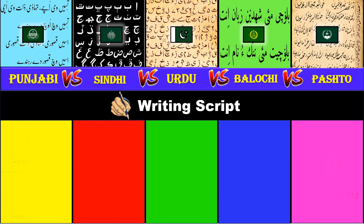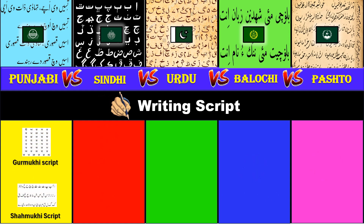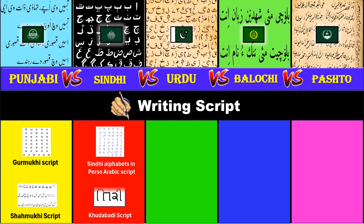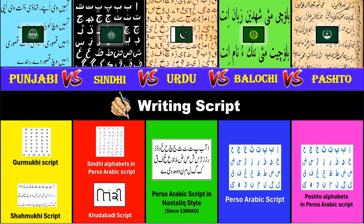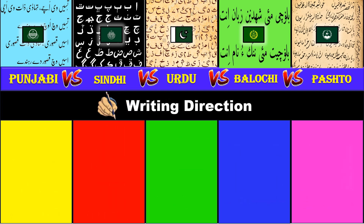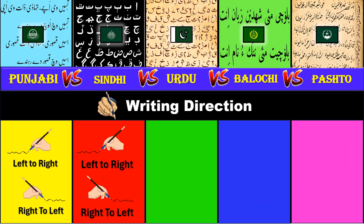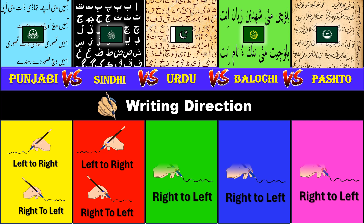Writing script. Punjabi uses Gurmukhi and Shahmukhi script. Sindhi uses Perso-Arabic and Khudabadi script. For Urdu, Balochi and Pashto it's Perso-Arabic script. Writing direction: for Punjabi and Sindhi it's both left to right and right to left depending on script, while Urdu, Balochi and Pashto are written from right to left.